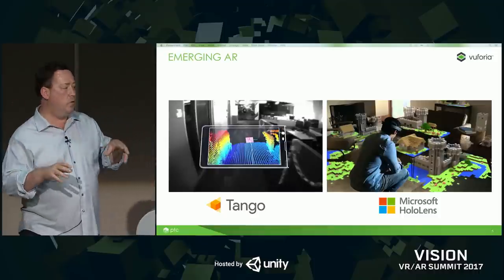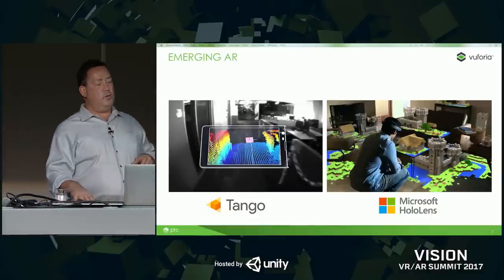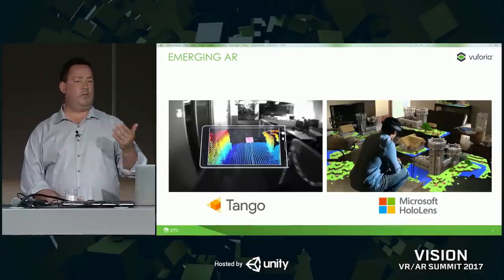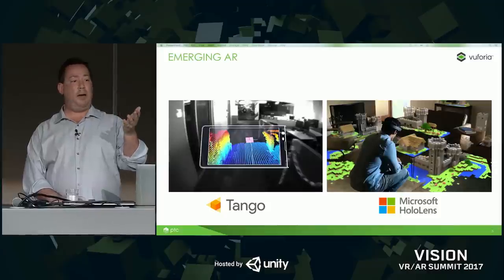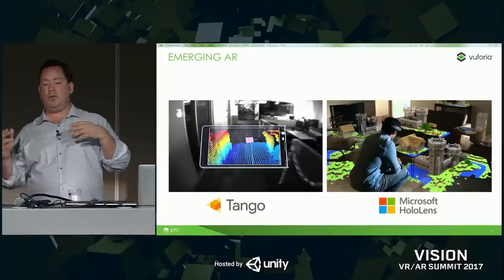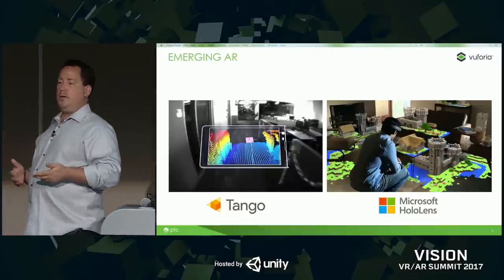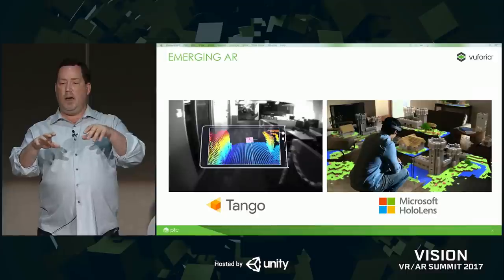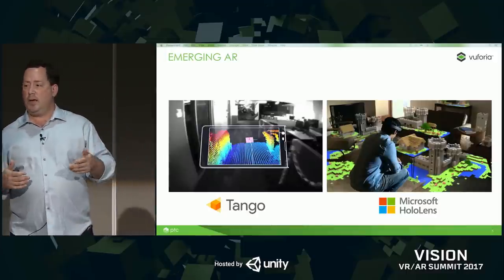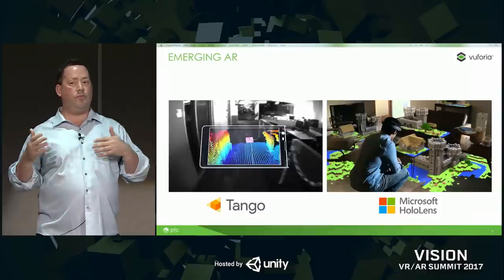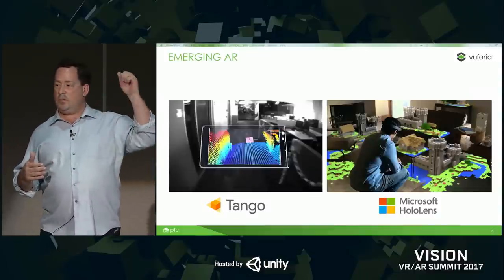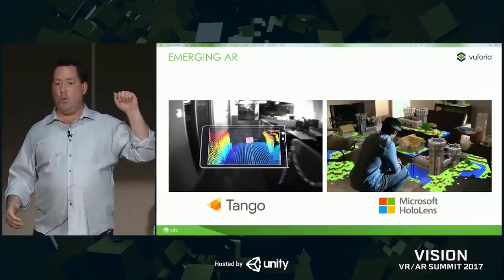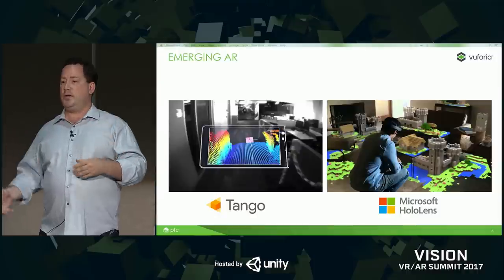Depth sensing emits IR and looks at the IR pulse with a camera, understanding by the phase or time of flight how far something is. It constructs a map of the environment — combining depth with what's referred to as visual inertial odometry. This gives you a combination of a 3D map of the environment, typically as a mesh, and a knowledge of your position and movement within that environment. Depth handles reconstruction and geometry; visual inertial odometry handles movement and position within a 6-degree-of-freedom envelope. Three degrees of freedom is rotation; 6 degrees of freedom adds translation.